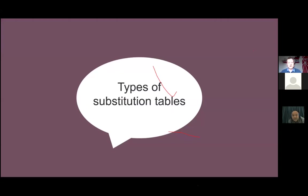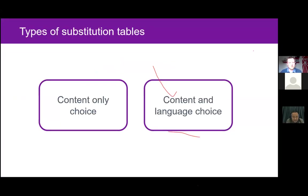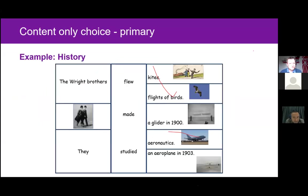Now let's analyze the types of substitution tables we can use and when we might use them. The first type is a 'content only' substitution table. Here's an example from a primary history lesson — the language focus is the past simple, which you can see in the second column with verbs like flew, made, and studied. This is a 'content only' table because the learners don't have any choices to make related to the language focus — whichever choices they make will be grammatically correct, since there are only correct past simple verbs to choose from.